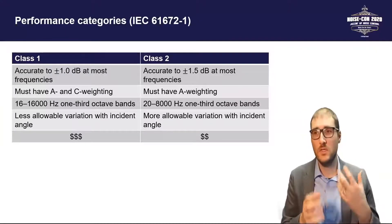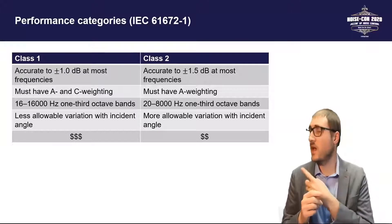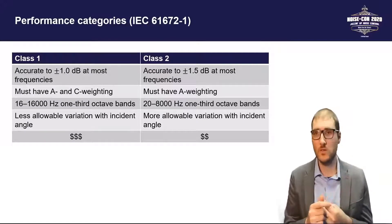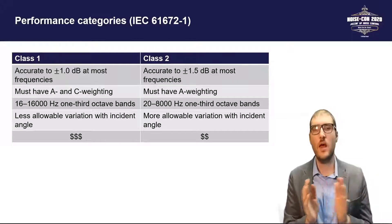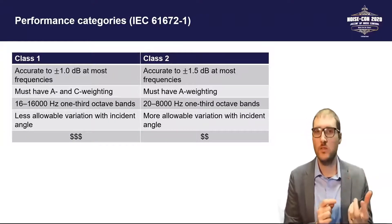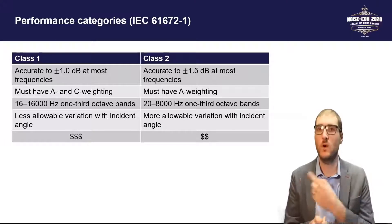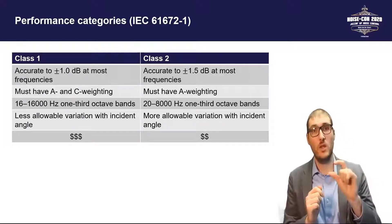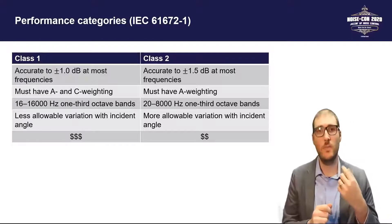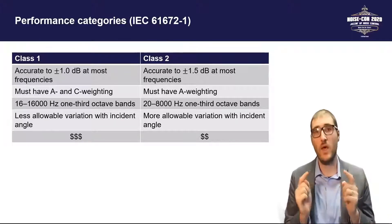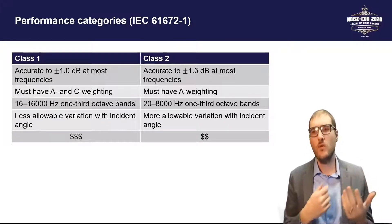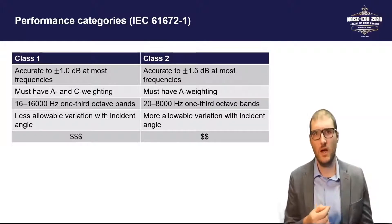The first thing you need to decide: if you look at IEC standard 61672-1, it defines two different classes of sound level meters. Class 1 and class 2 meet a lot of the same criteria, but class 1 is just more accurate — to within plus or minus 1 dB at most frequencies, whereas class 2 has wider error bands of one and a half dB. Class 1 also requires C weighting along with A weighting, and a wider frequency range. Of course, you're going to pay for those differences.